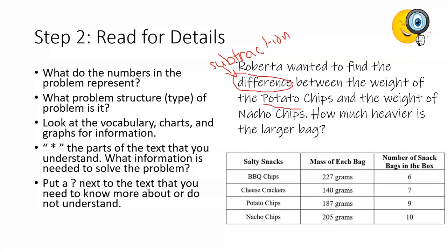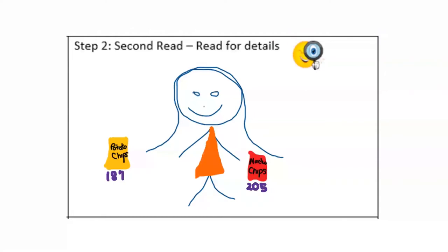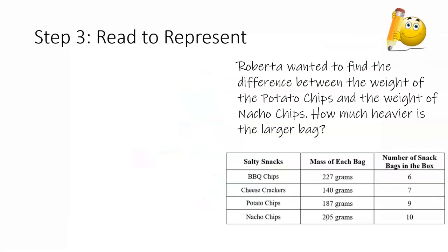I need to find potato chips and nacho chips. So, she's comparing those two and she wants to know how much heavier is the larger bag. So, I need to figure out which bag is larger. So, I need to find the potato chips and the nacho chips. And now, I have the new information about the weight. So, the potato chips weigh 187 grams and the nacho chips weigh 205 grams. I added the new information we learned to my drawing. The potato chips I wrote 187 underneath because that's the weight of the potato chips and the nacho chips I wrote 205 because that's the weight of the bag of the nacho chips.